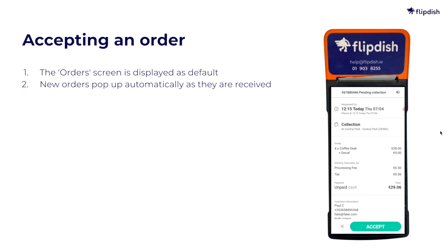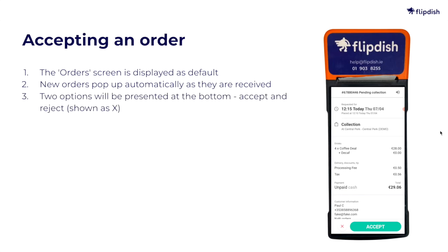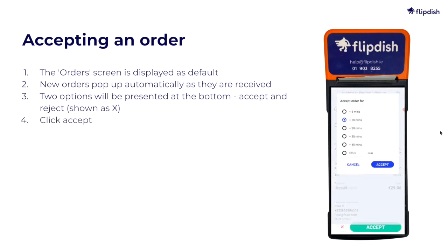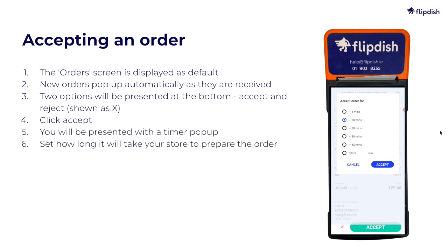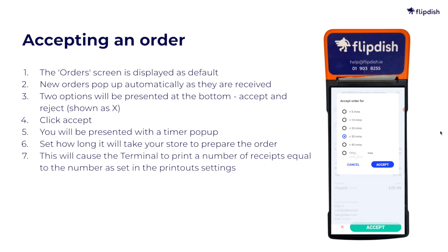The pending orders process is as follows. There will be two options at the bottom: accept and reject, shown as an X. Upon clicking accept, you'll be prompted with a pop-up timer. From here, you can set how long it will take your store to prepare the order. You can manually enter the time or select from some default times available, and then click the blue accept button to finalize the process.